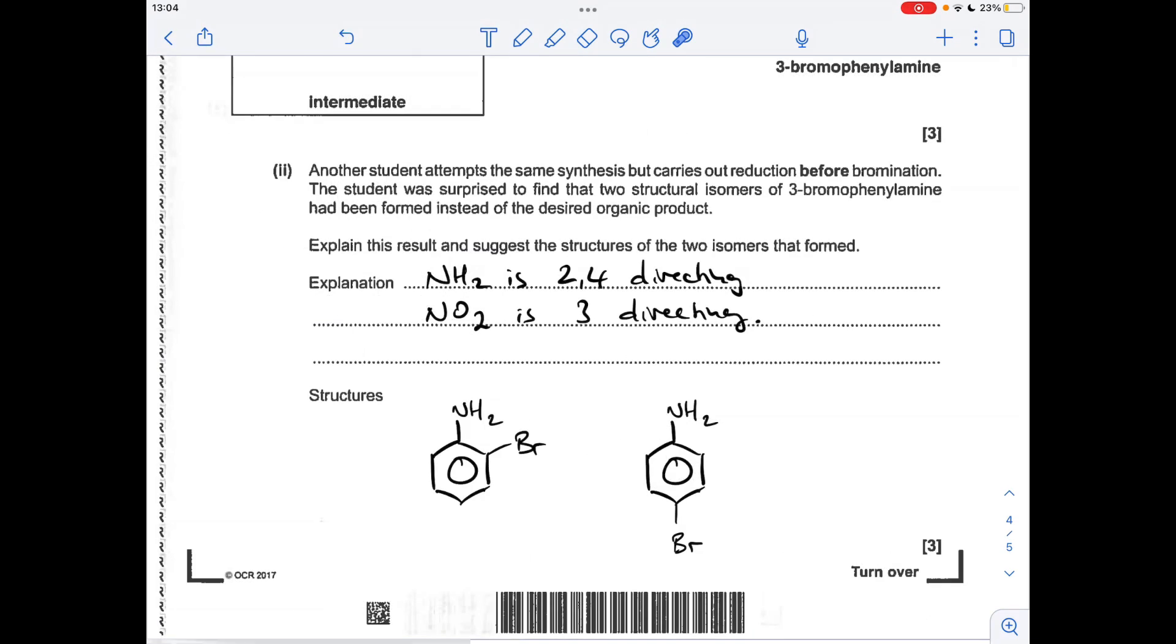For the final part, the students carried out reduction before bromination. Why have they made these two structural isomers of 3-bromophenylamine? Because the amino group is a 2,4-directing group, whereas the nitro group is a 3-directing group. So the two structural isomers are going to be 2-bromophenylamine and 4-bromophenylamine.